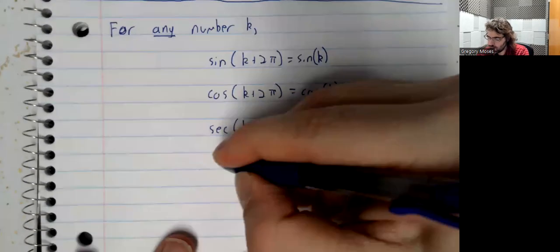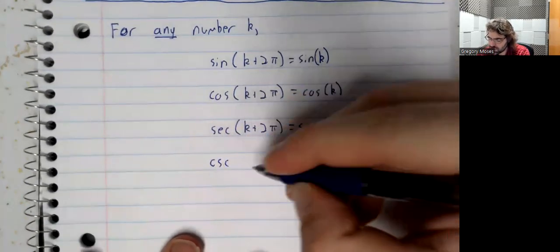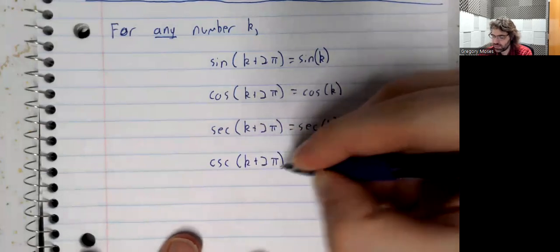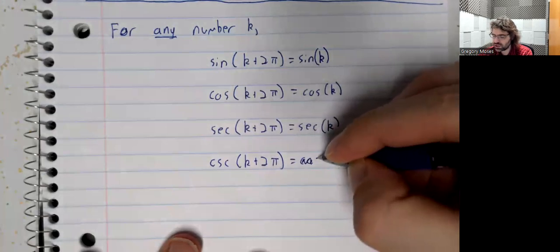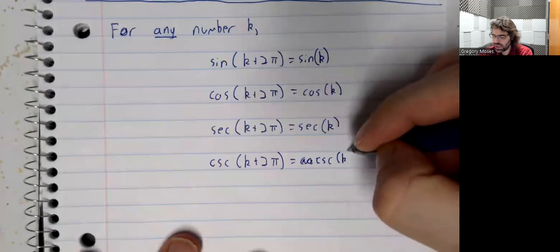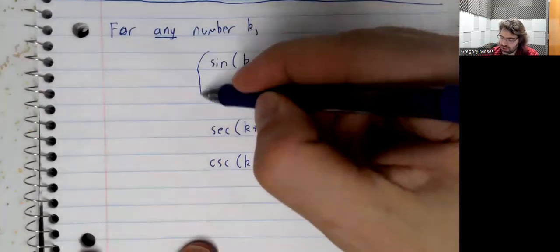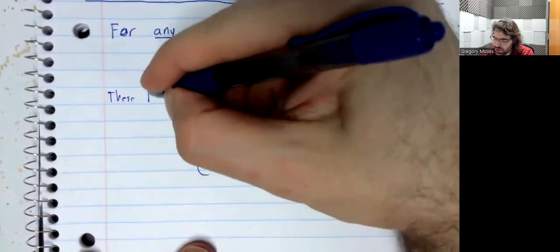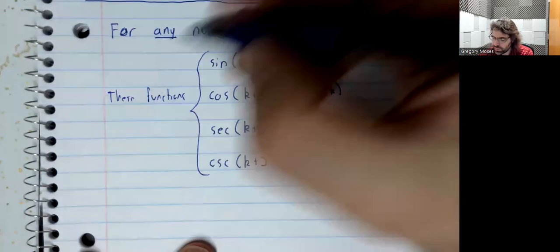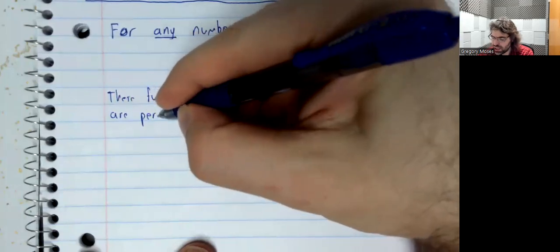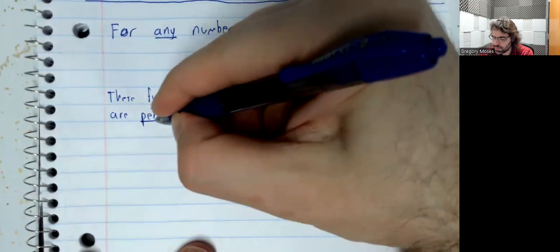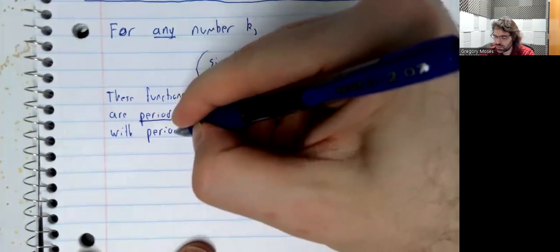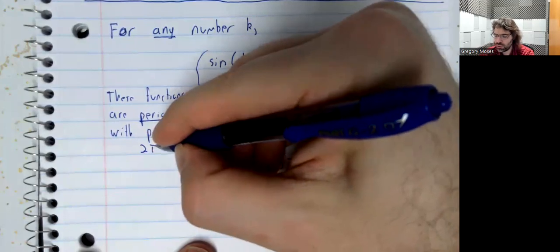And the cosecant of k plus 2 pi is the cosecant of k. And we summarize this by saying these functions are periodic with period 2 pi.